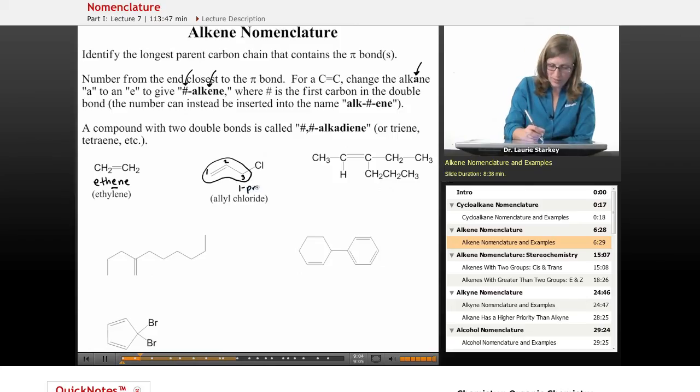So this is one propene. We're going to indicate the first carbon of the carbon-carbon double bond. So this implies that there's a double bond starting at one and going to two. And what else do we have on here? We have a chloro group at carbon three. So this is 3-chloro-1-propene.